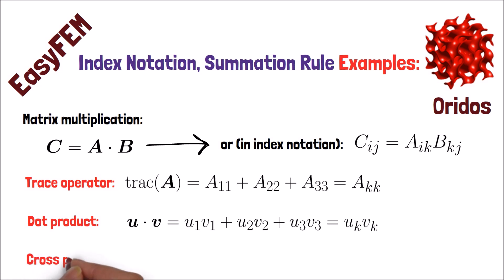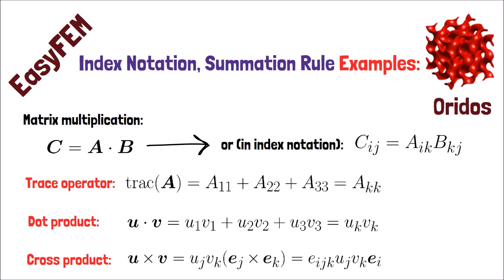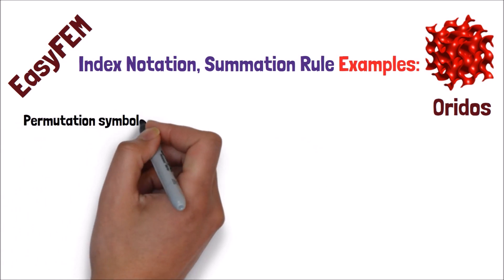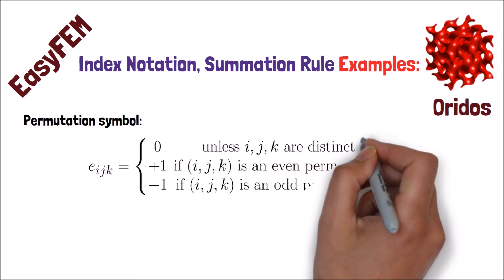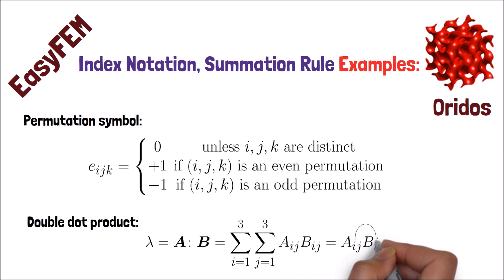We can also define a cross-product of two vectors. Where EIJK is the permutation symbol, it is equal to 1 when IJK is an even permutation, it is equal to minus 1 when IJK is an odd permutation, otherwise it is equal to 0. We can also define the double dot product, where the resulting value will be scalar because of the Einstein Summation over Index I and J.